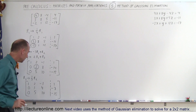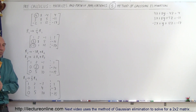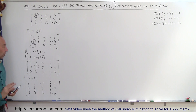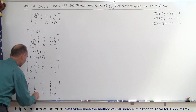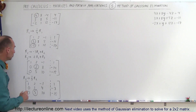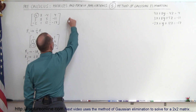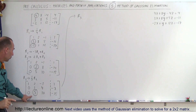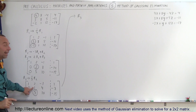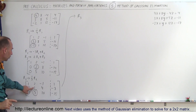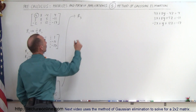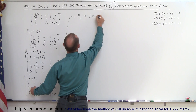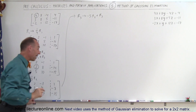Next, to reach reduced row echelon form I want to turn both the 2 in row 1 and the 5 in row 3 into 0s. For now, to get even row echelon form, I need to turn the 5 into a 0. I do that by taking row 3 and replacing it with negative 5 times R2 added to R3. This will make the 5 become a 0.